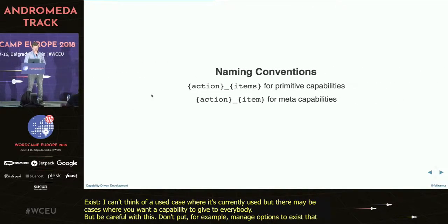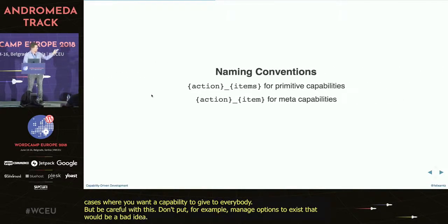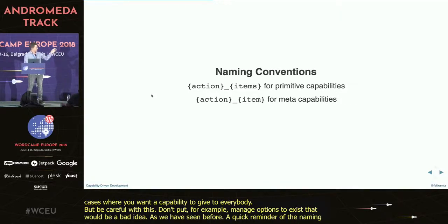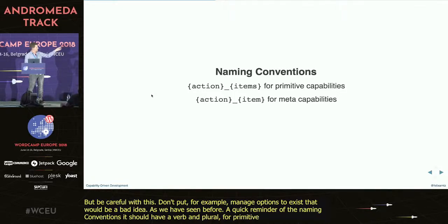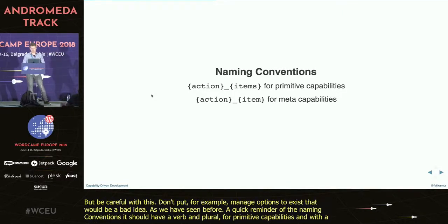Just a quick reminder of the naming conventions. This should always consist of a verb, an action, and a plural string for primitive capabilities, and then the same thing but with a singular noun for the respective meta capabilities.